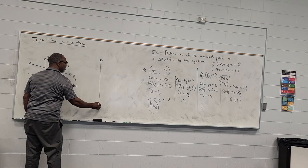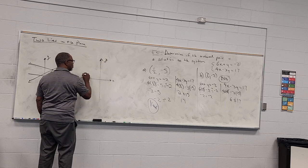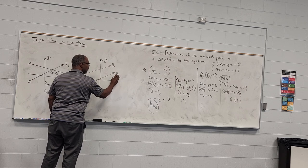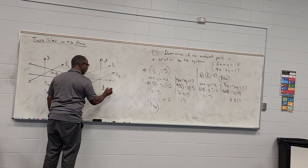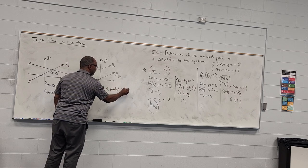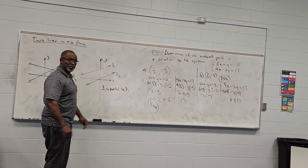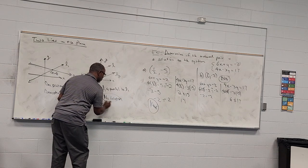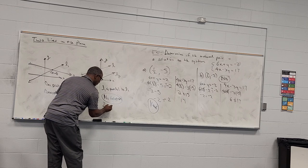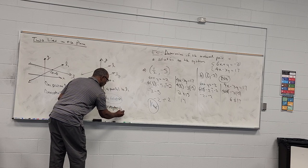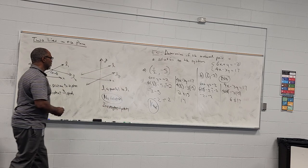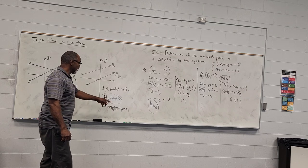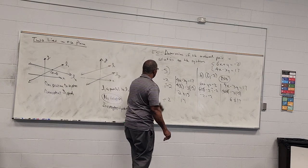The second possibility: one line L1 might be parallel to line L2. If they're parallel lines, they stay the same distance apart forever and never cross. So there is no solution to this system. This is called an inconsistent system — there will be no solution to an inconsistent system.